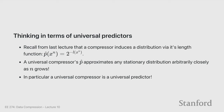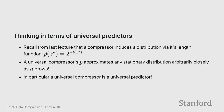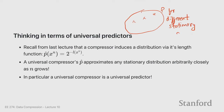Another way to think about this is in terms of universal prediction. Recall that every compressor induces a distribution: for any compressor with length function L, you get a p-hat which is 2 to the power minus L. A universal compressor's p-hat approximates any stationary distribution arbitrarily closely as n grows. So there exists one single distribution that is a good approximator of every other distribution.